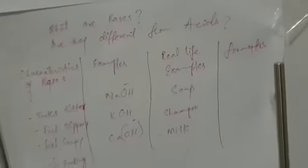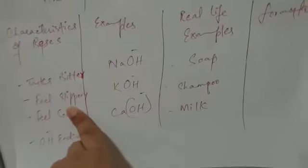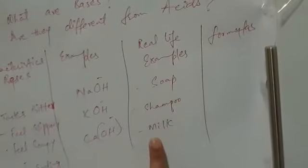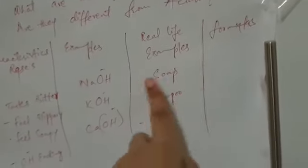For acids, we said some real-life examples can be citrus fruits. But for bases, some real-life examples are soap, shampoo, and milk, because we said they are slippery or soapy. So there are some real-life examples. I want you to write some more examples and formulas.